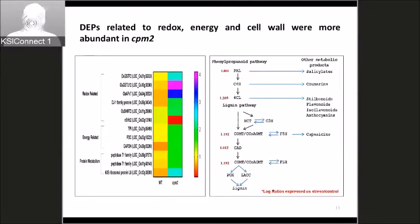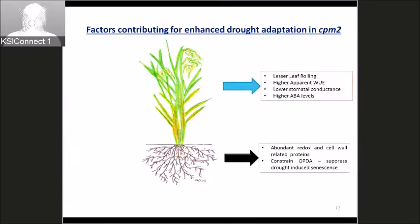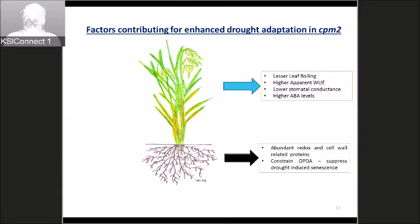Overall, the factors contributing to drought adaptation in CPM2 include: in shoots — less leaf rolling, higher apparent water use efficiency, lower stomatal conductance, and higher ABA levels (data not shown); and in roots — abundant redox and cell wall related proteins. We also speculate that by constraining OPDA accumulation, drought-induced senescence could be suppressed.